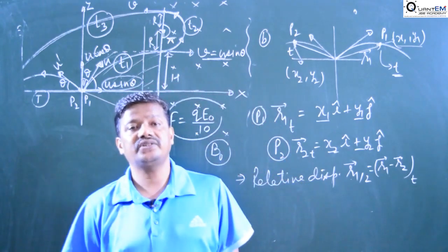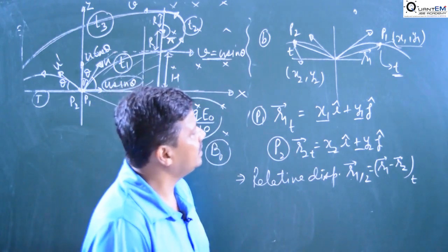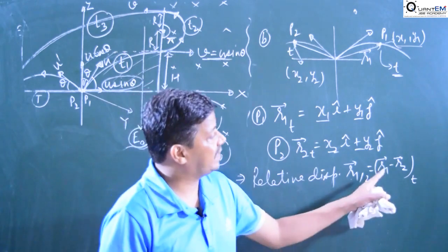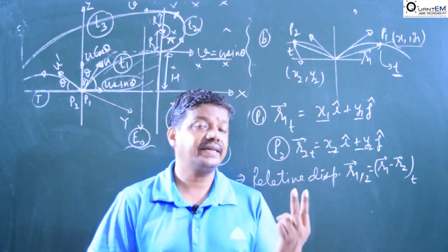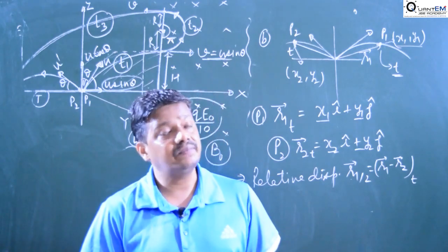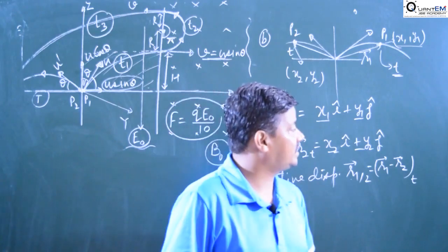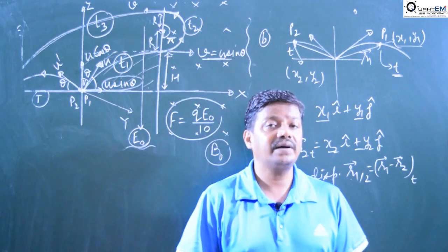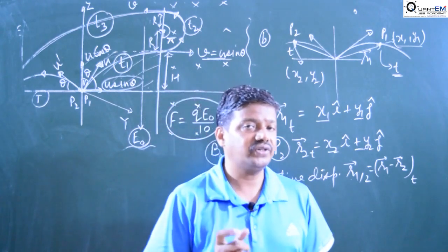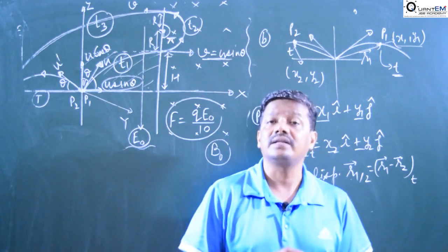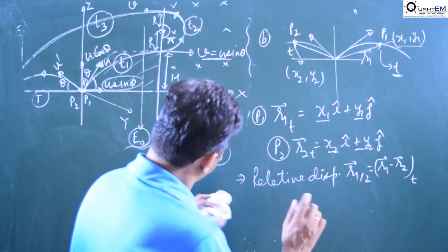The relative displacement R12 = R1 minus R2. You can easily calculate this — keep in mind where there is resistance and where there is none. You get the relative displacement of the particles at any time t. If the relative displacement is a linear function of time, then the relative path will be a straight line. If the result is in i and k, then the relative path is a straight line in the XZ plane. If it is quadratic in time, then the relative path will be parabolic.